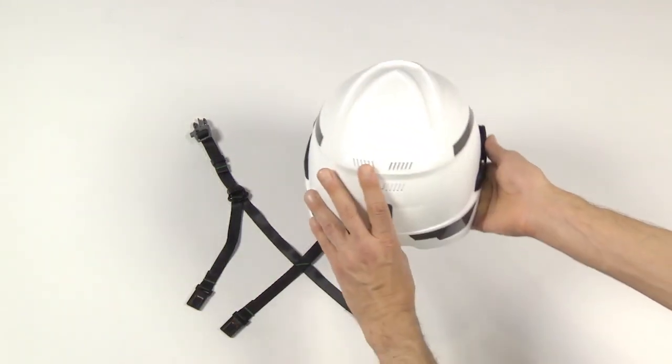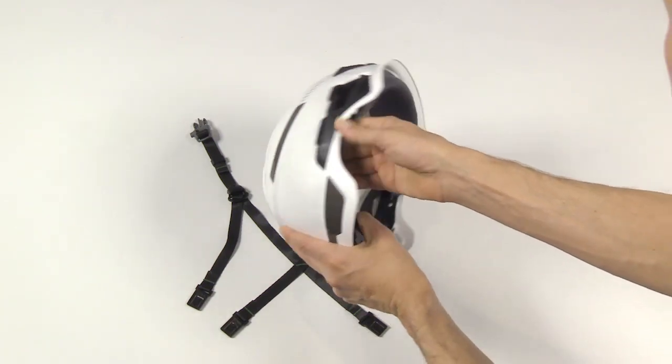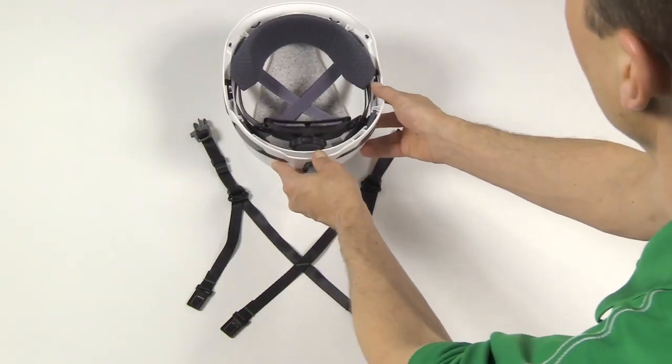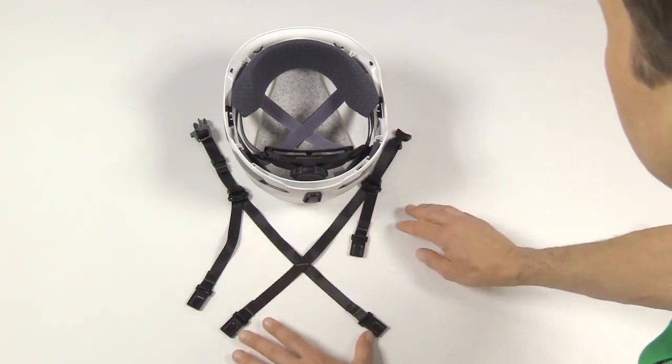The safety helmet should face away from you and be upside down on the table as such.